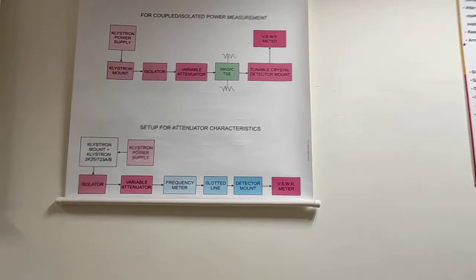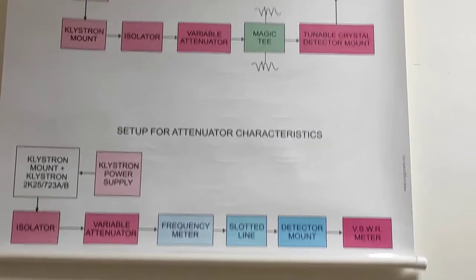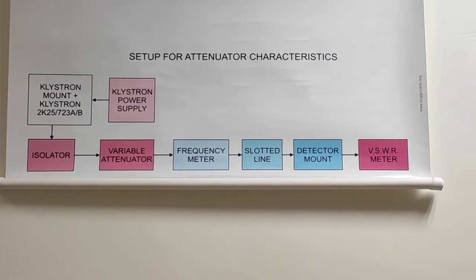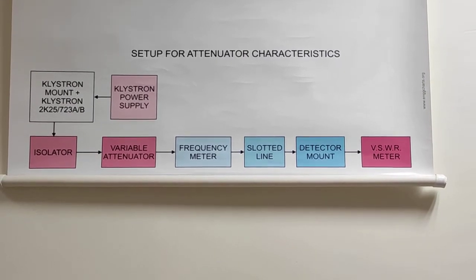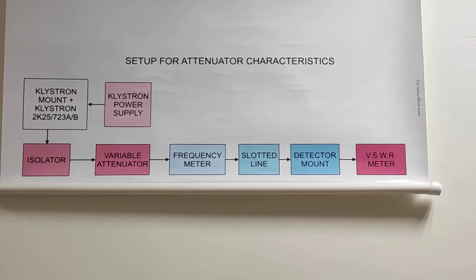Today we will see about VSWR measurement. This is the experimental setup or block diagram for measuring VSWR. Initially, we have a klystron power supply, klystron mount, isolator, variable attenuator, frequency meter, slotted line, detector mount, and VSWR meter.